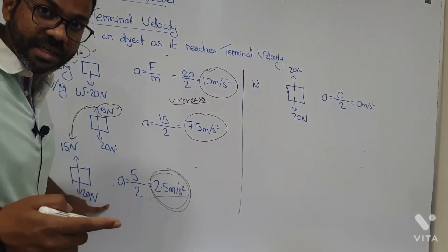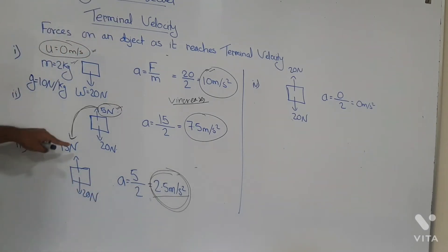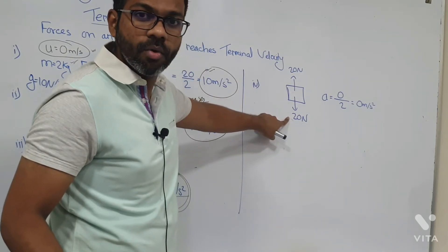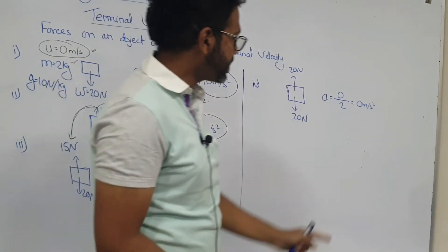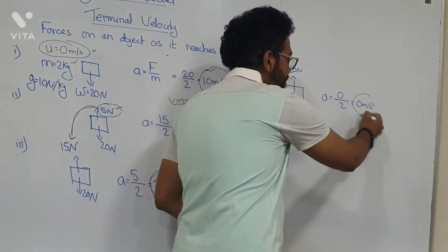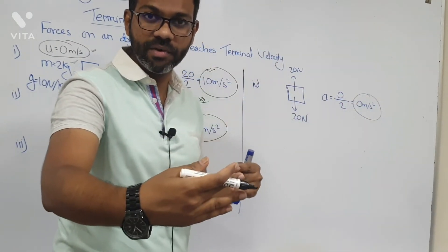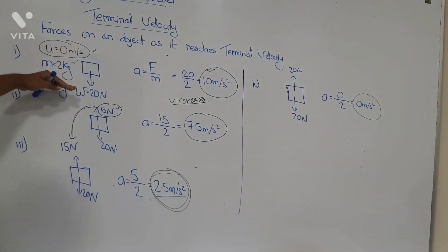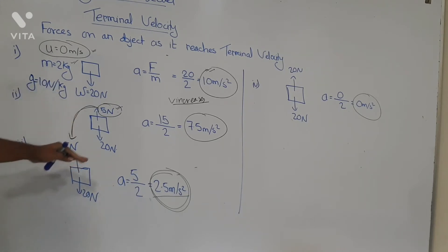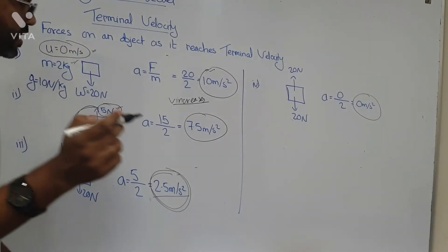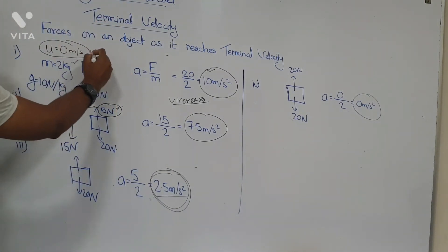The air resistance kept on increasing, and at this point the air resistance becomes equal to the weight of the object. So the resultant force becomes zero and the acceleration becomes zero — it does not accelerate any further. So it started from rest, kept on accelerating, the acceleration decreased and decreased, and at one point the acceleration becomes zero.